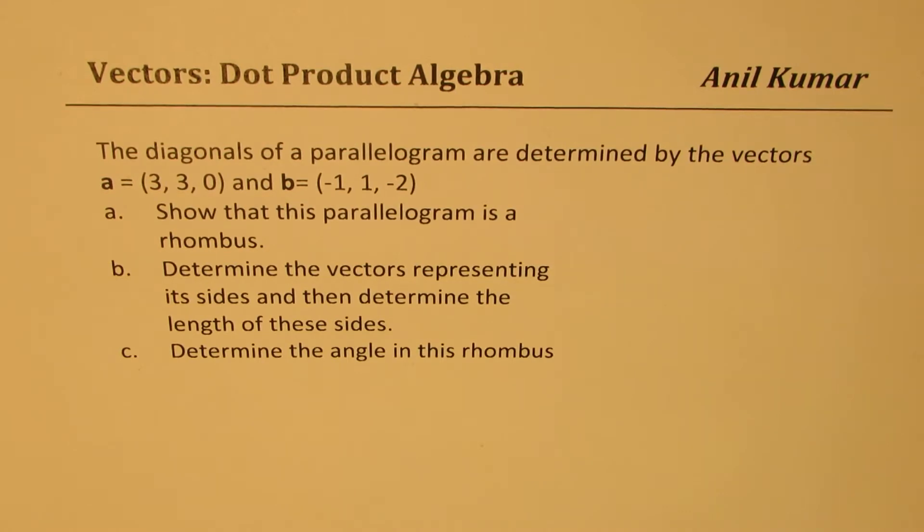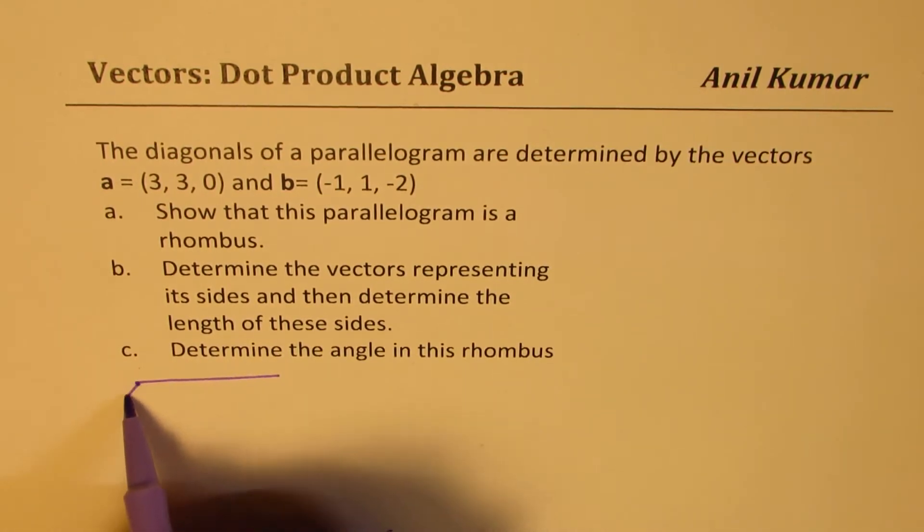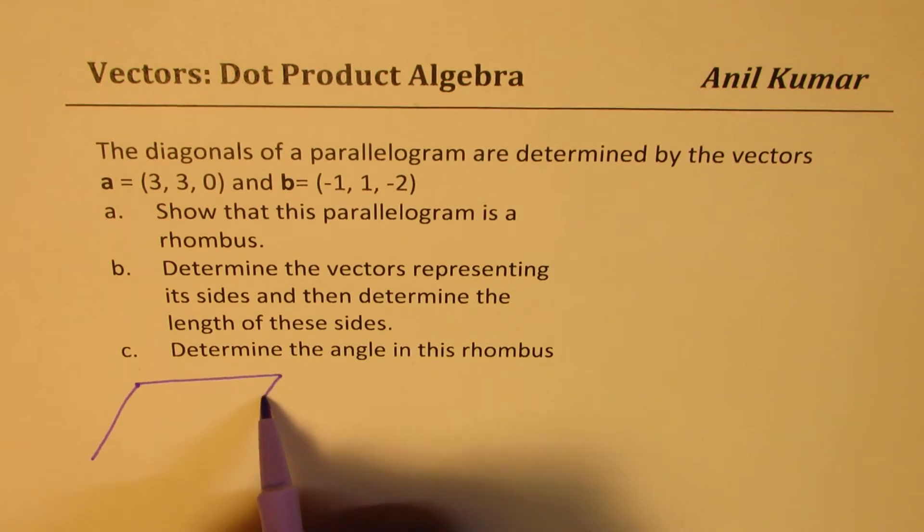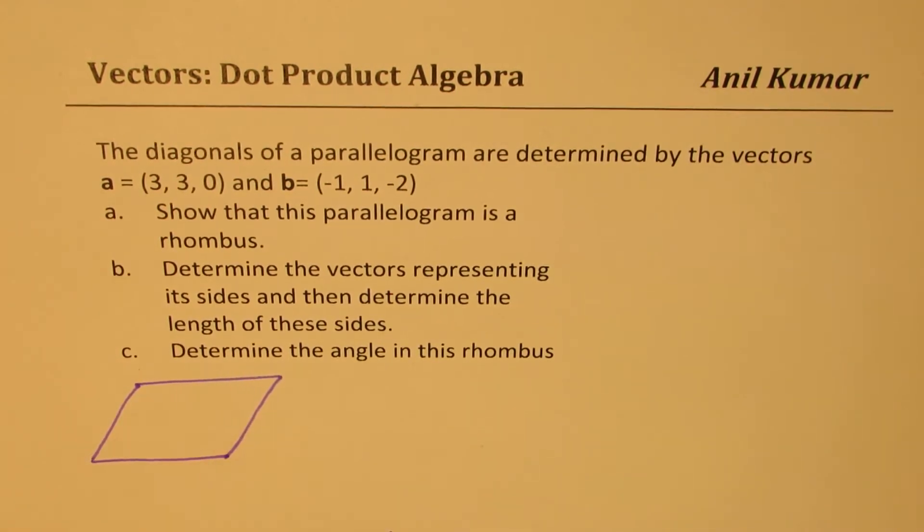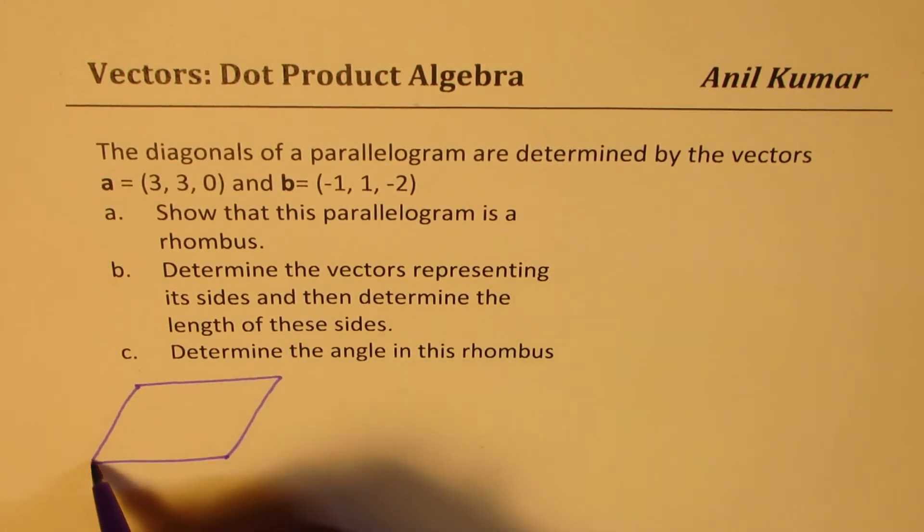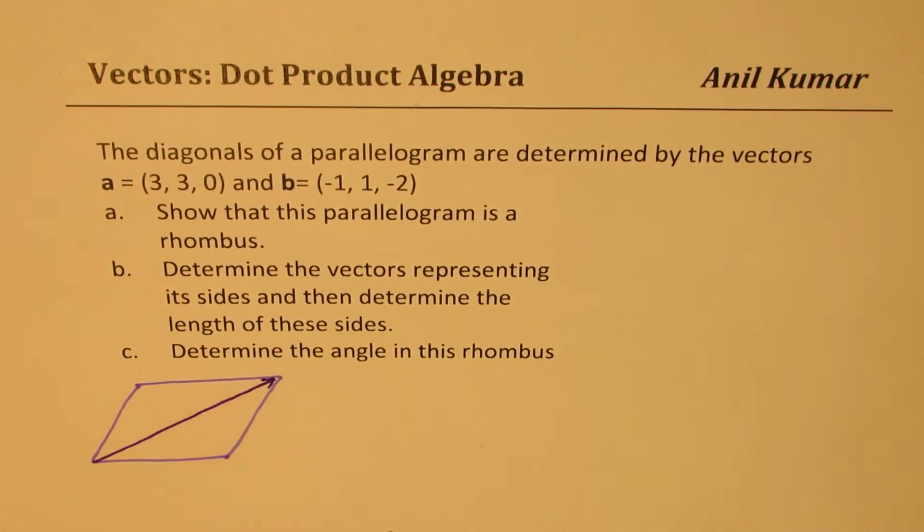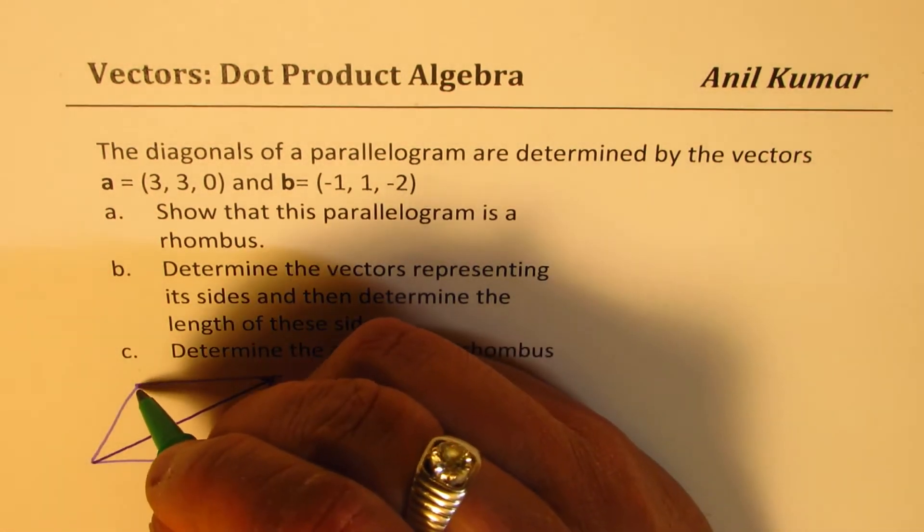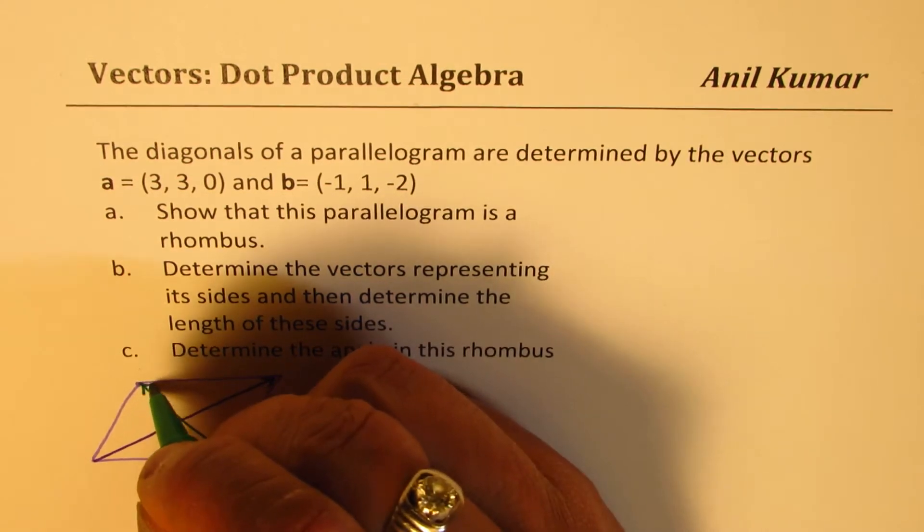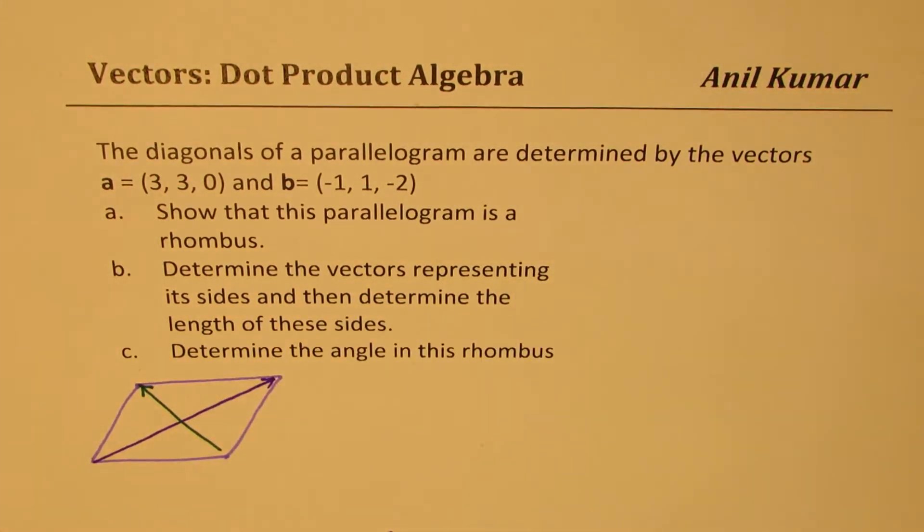So to prove that it is a rhombus, what should we do? Well the diagonals of a rhombus are at right angles. So that is the main thing which we need to understand. So first let me sketch one rhombus here and then we'll try to prove what is required. We're given here two diagonals. Let's say this is one of the diagonals, the other one let's say is this. So these are the two diagonals given to us.